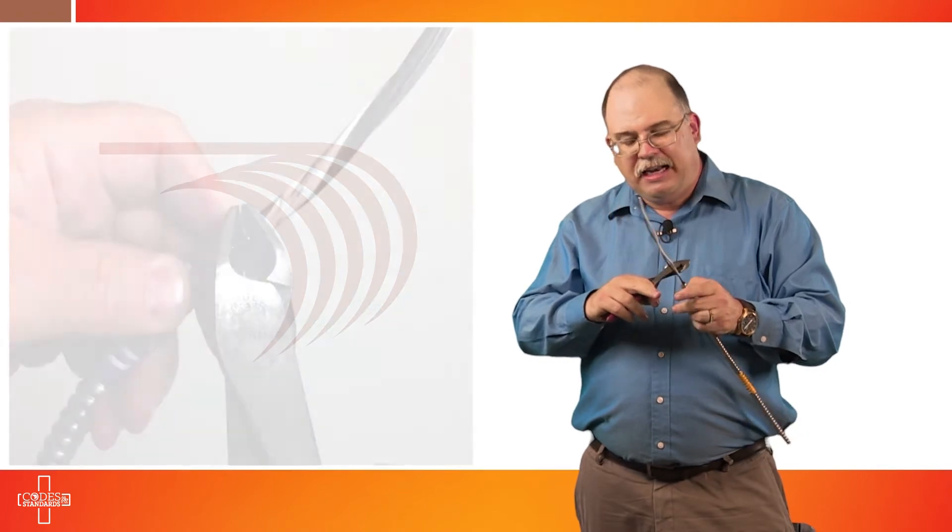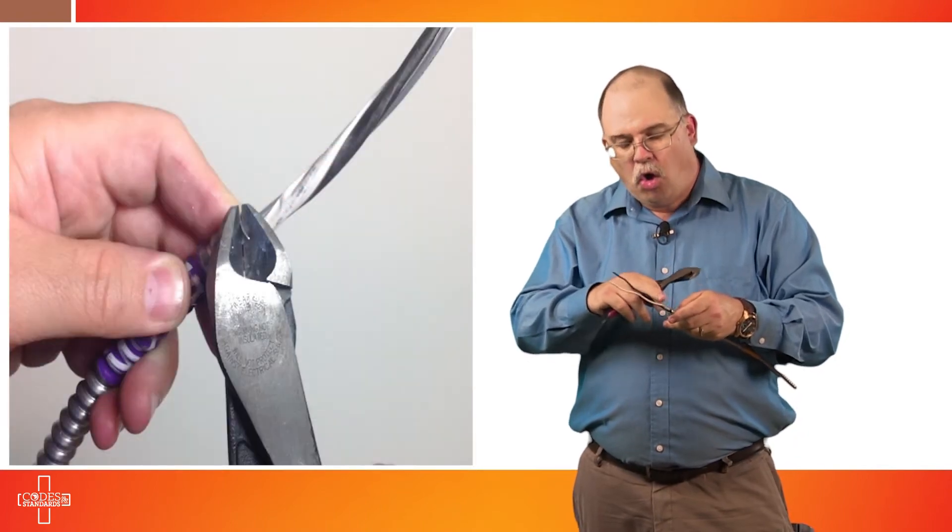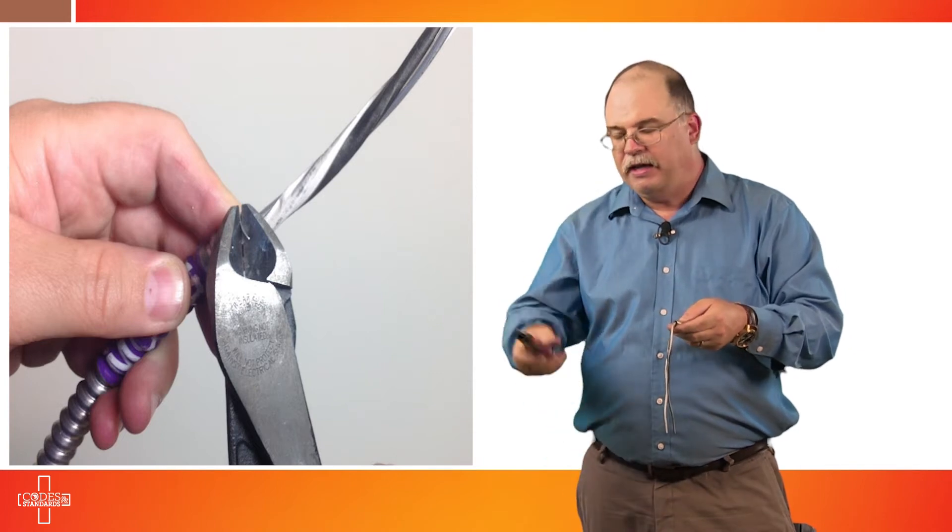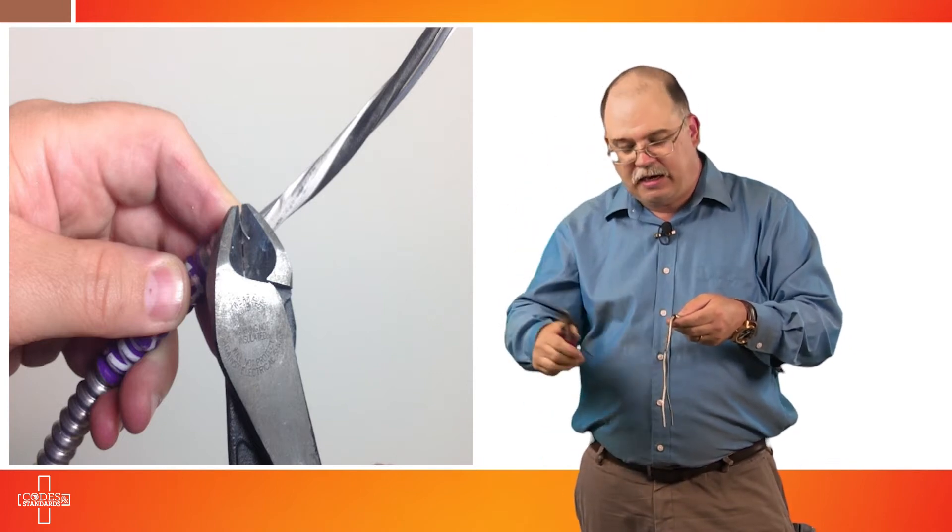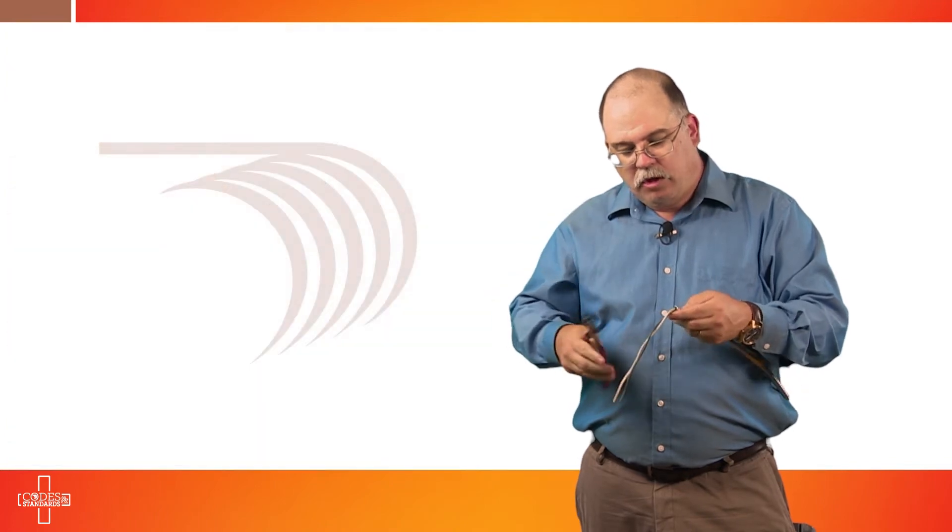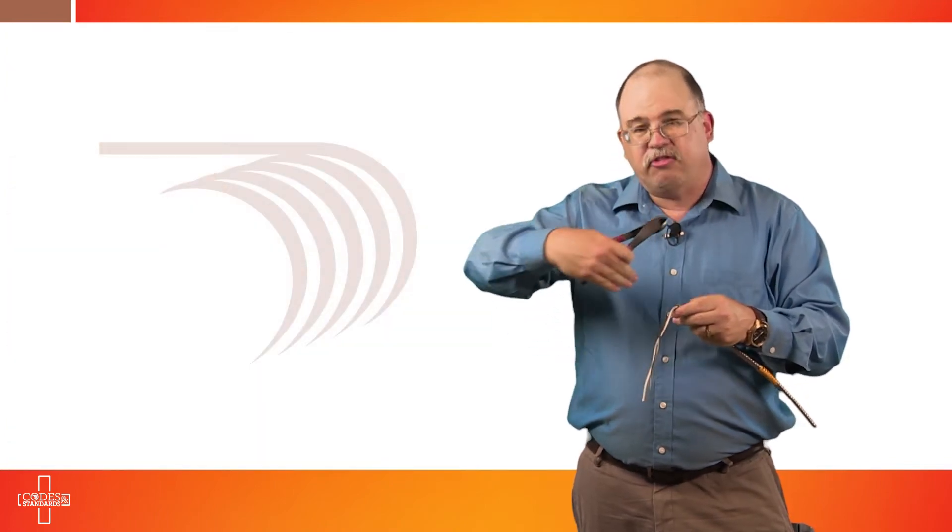That leaves us with a black and a white. But there's one more step you need to do. Remember when you used that roto tool and you cut this metallic sheathing? It left a sharp point on the metallic sheathing. You want to bend the conductors away from that sharp point, take your diagonal cutters again, and you want to go in and you want to cut off that sharp point. The reason you're doing that is you want to create a square surface so that connector will fit properly down onto the cable.